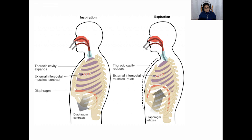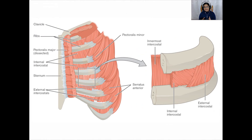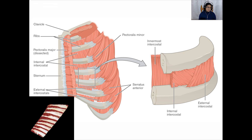Joining each rib to the next are two sets of muscles called intercostal muscles. Like many scientific words, there's a simpler English meaning: 'costal' refers to rib bones and 'inter' means between. So intercostal muscles are muscles that exist between the rib bones. If you eat meat, you would have seen these intercostal muscles attached to the long bones of what we call spare ribs.